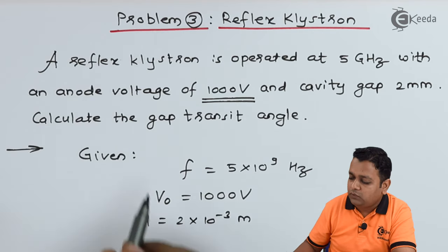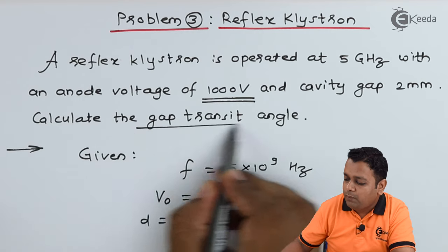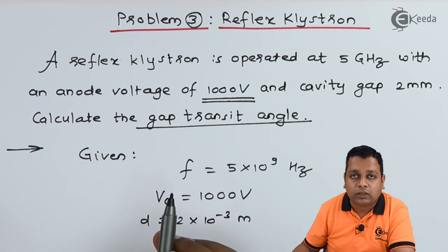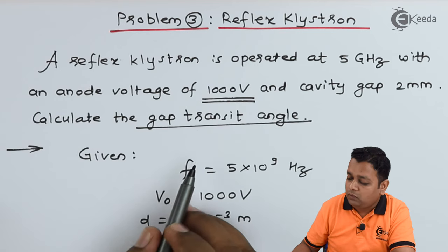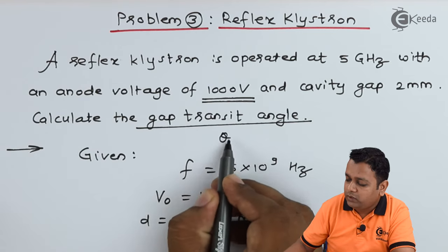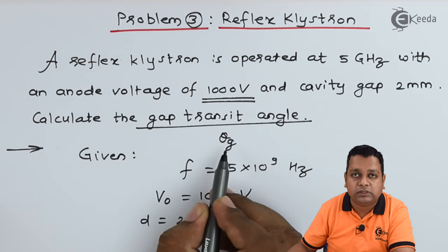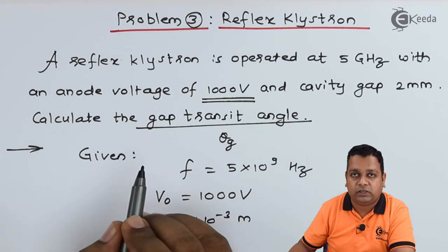With these given details we have to calculate the gap transit angle. For the gap spacing between the grids of the reentrant cavity we have to denote the angle by θ subscript G. G is the suffix for the gap spacing.